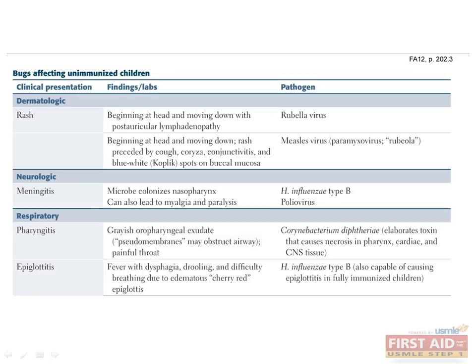Here's a list of bugs that can infect unimmunized children. For Step 1, you should only suspect these if the question states that the child is from another country or has not received immunizations. Pathogens that can cause rash include rubella and measles virus. Meningitis can be caused by H. influenzae type B as well as poliovirus. Pharyngitis can be caused by Corynebacterium diphtheriae, and epiglottitis can be caused by H. flu type B.